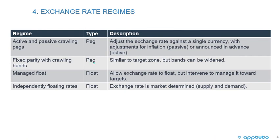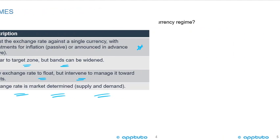Now looking at peg and floating type regimes. Active and passive crawling pegs adjust the exchange rate against a single currency — passively for inflation or actively announced in advance. Fixed parity with crawling bands is similar to the target zone, but bands can be widened. A managed float allows the exchange rate to float but intervenes to manage it toward targets. Finally, independent floating rates are market-determined solely by supply and demand.